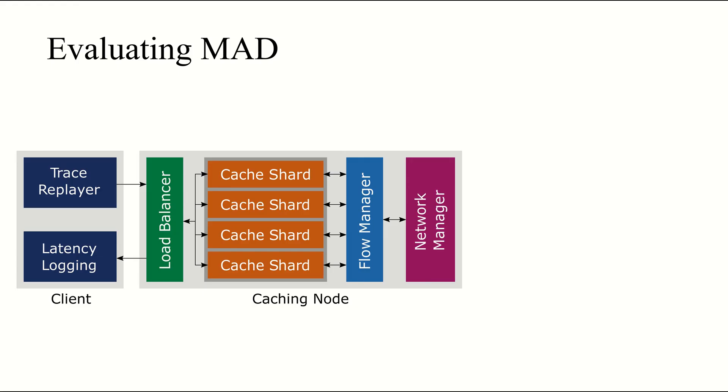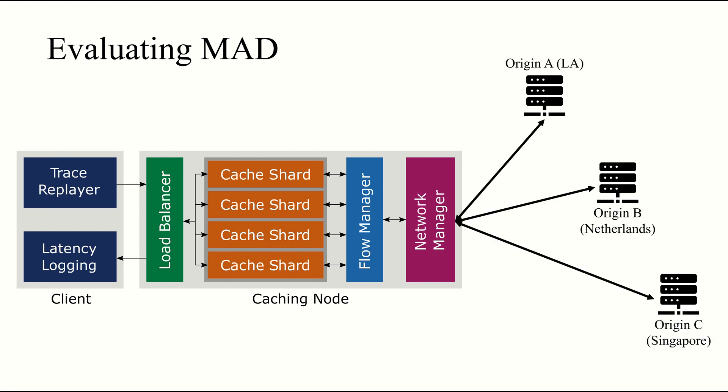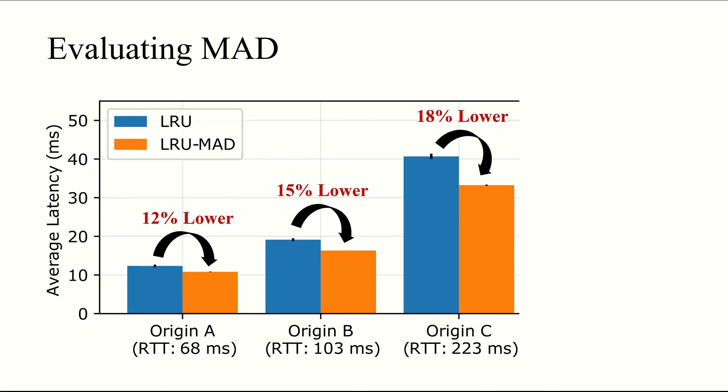In order to evaluate our online caching algorithm, we returned to our key value store implementation. We deployed our caching node in a local server cluster at CMU in Pittsburgh, and set up virtual machines in three different locations around the world. One in Los Angeles, one in the Netherlands, and one in Singapore. Using this setup, we measured the average latency provided by LRU and its MAD variant for each origin location. As the RTT increased from 68 to 223 milliseconds, we saw latency improvements of 12 to 18%, going from origin A to origin C. Observe that as Z increases, so does the improvement provided by the MAD variant.